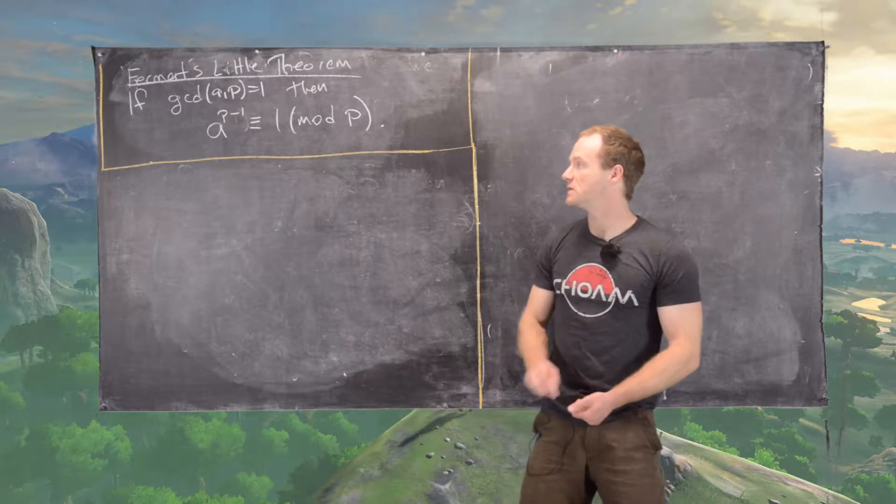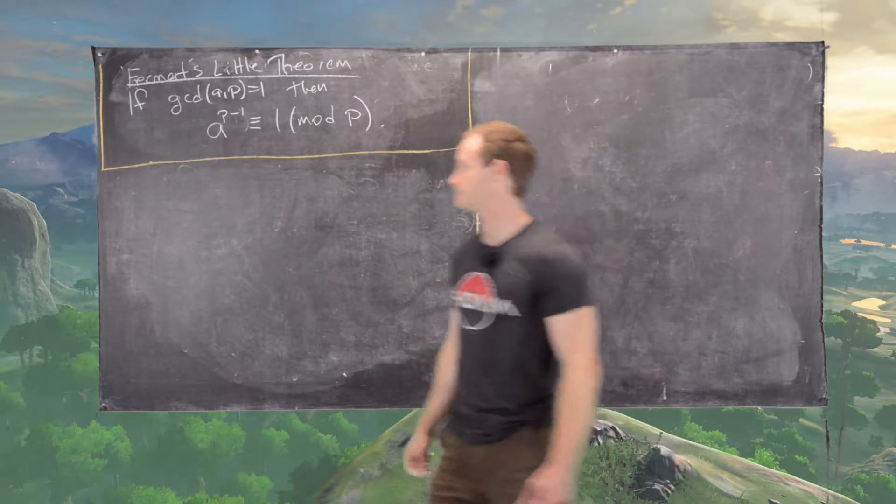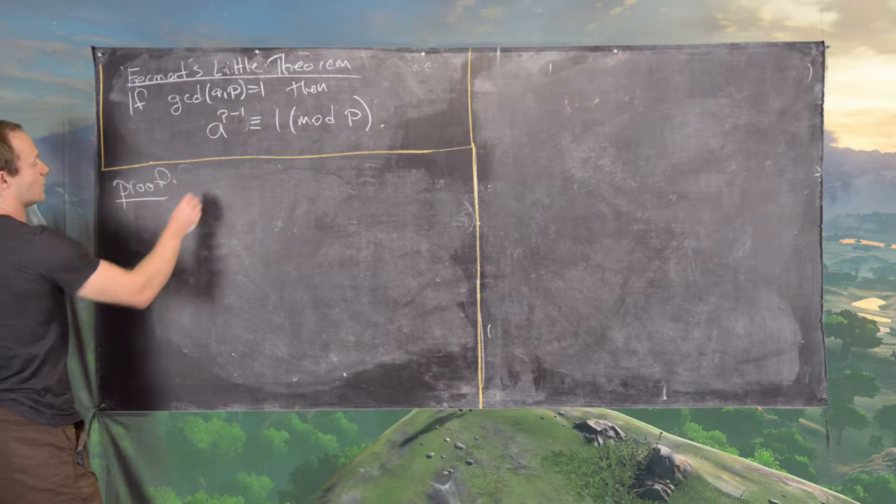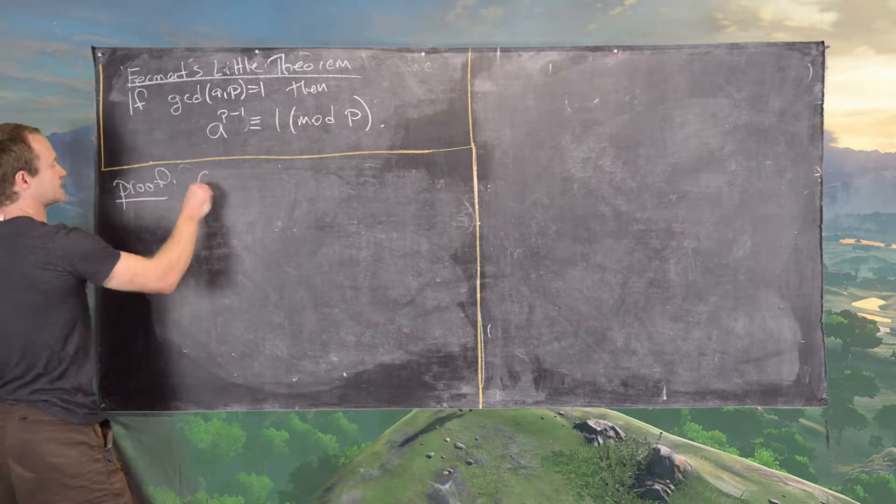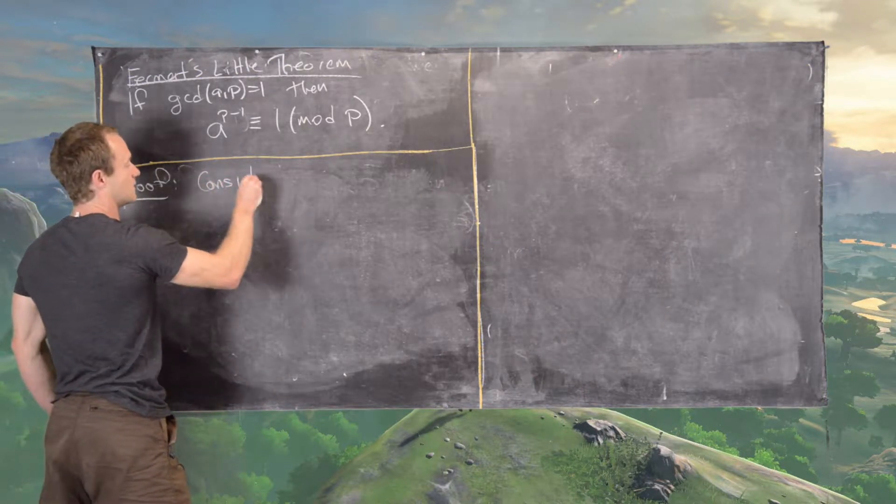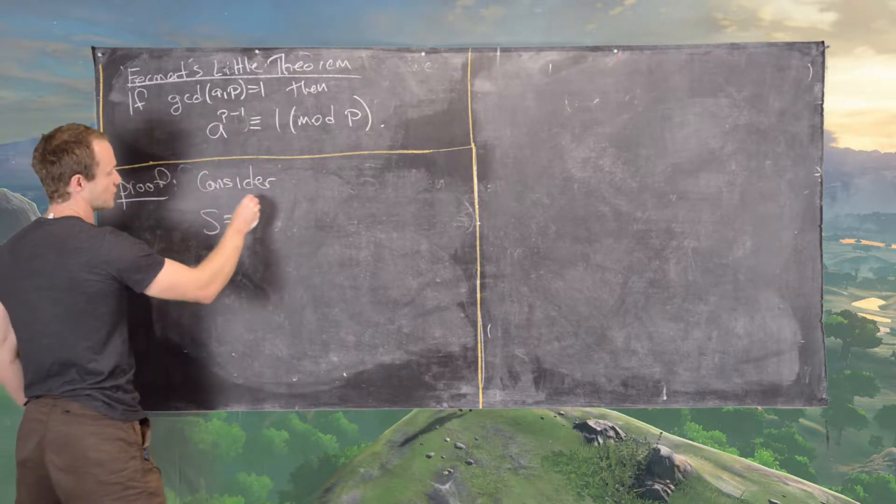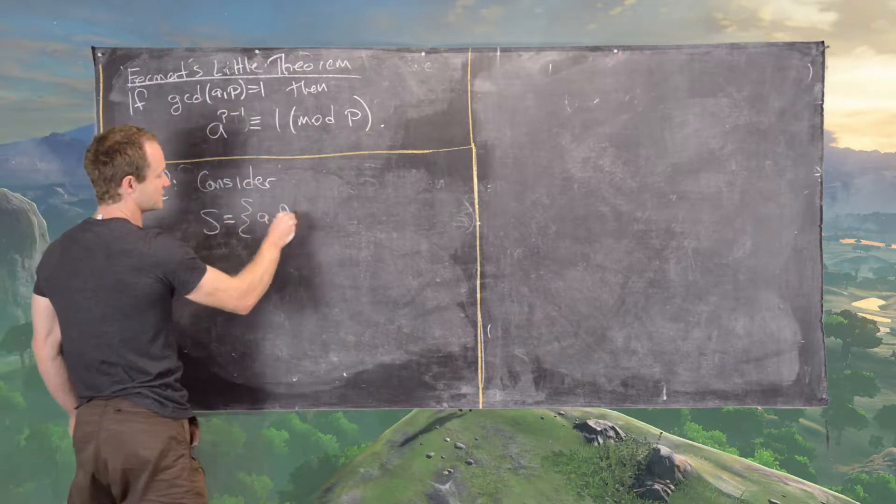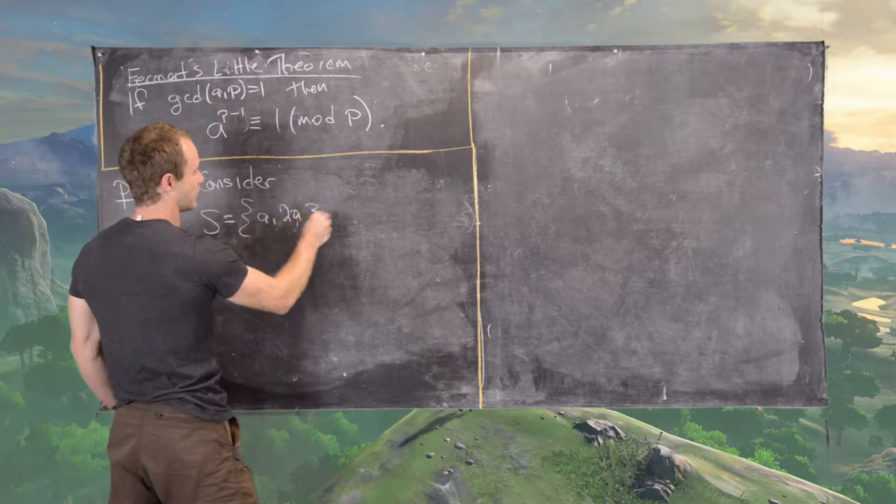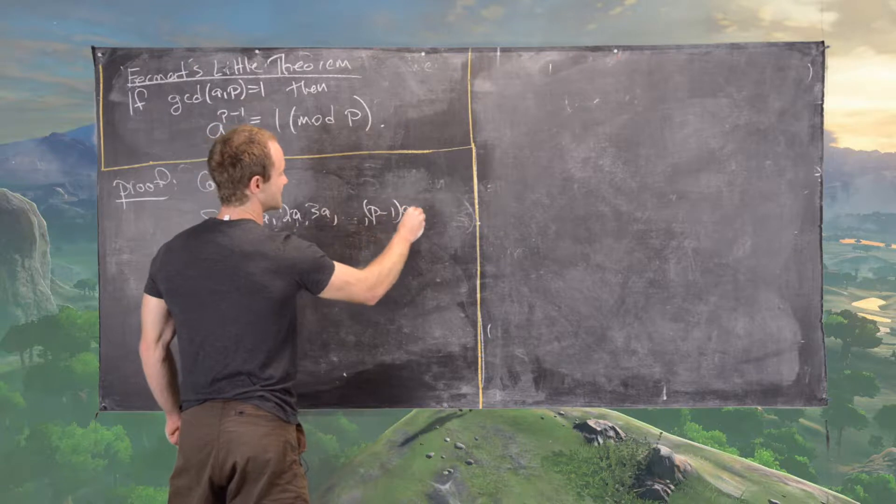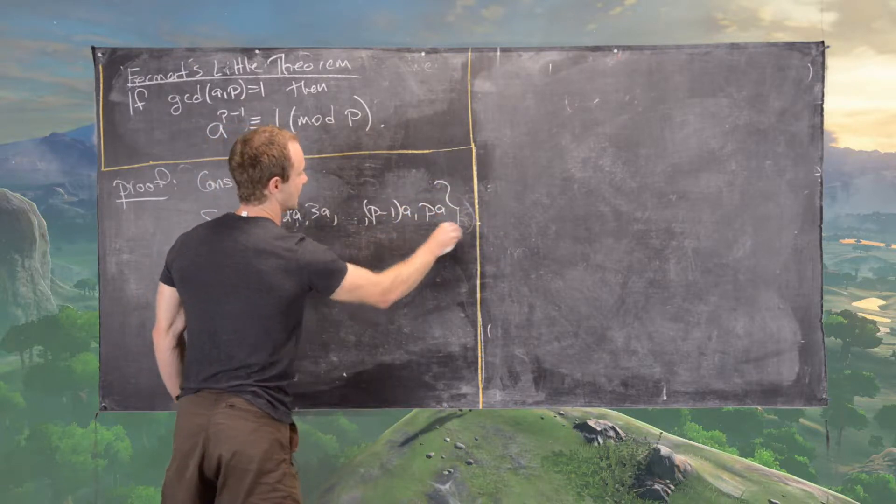Okay, so let's get into the proof. So what we want to do for the proof is to consider the following set of numbers. S, which equals A, 2A, 3A, up to P minus 1 times A, and then P times A.